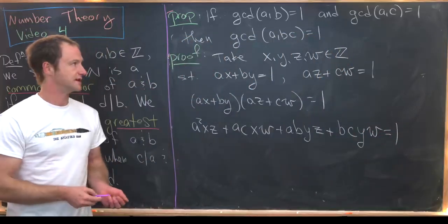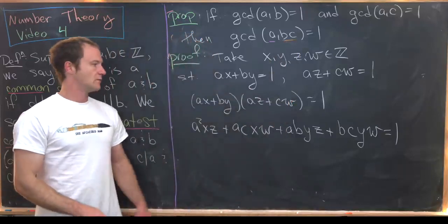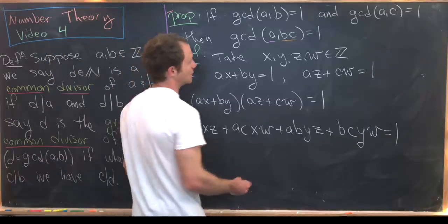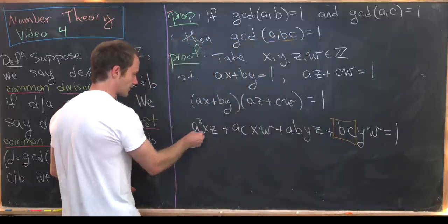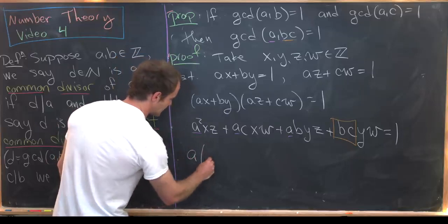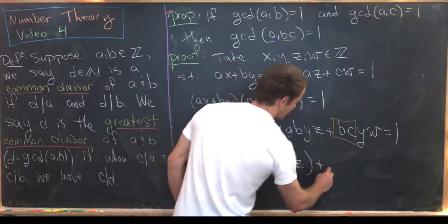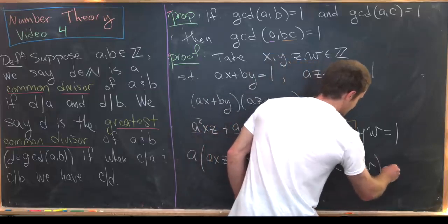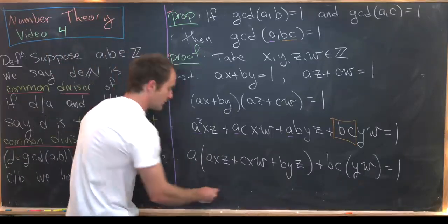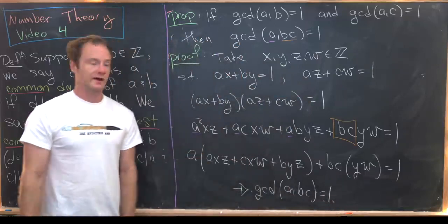Our goal is to show GCD(a, bc) equals one. We can do that by writing one as a linear combination of a and bc. Noticing that bc appears as a term and all other terms contain a, we factor accordingly: a·(axz plus cxw plus byz) plus bc·(yw) equals one. We've written one as a linear combination of a and bc, so by the corollary, GCD(a, bc) equals one.